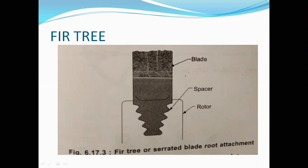The fur tree, or serrated blade root attachment, is used for high-speed turbines with large centrifugal forces. If there is more centrifugal force in the turbine, this high-speed attachment type is used there.